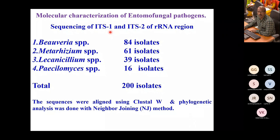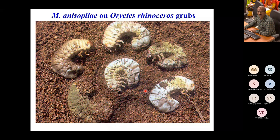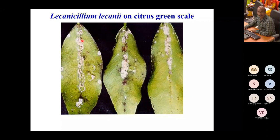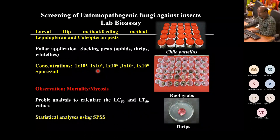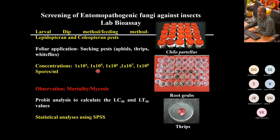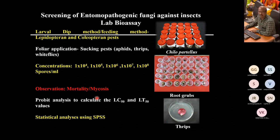Images show coffee berry borer infected with Beauveria bassiana, Oryctes rhinoceros beetle, and grubs infected by Metarhizium in the field. Lecanicillium lecanii on citrus green scale is also shown. After isolation from different soil or insect cadavers, we screen pure cultures, identify them, then go for bioassays against different chewing pests like chafer grubs, root grubs, and sucking pests like thrips. A standard protocol is used for bioassay screening at different concentrations, and probit analysis is used to analyze mortality and mycosis.